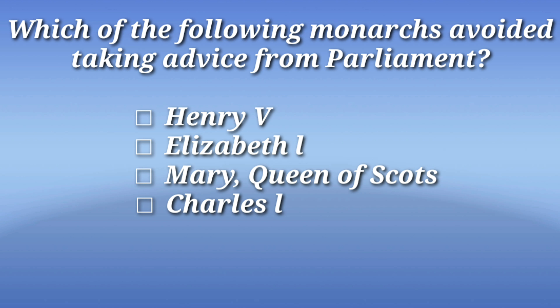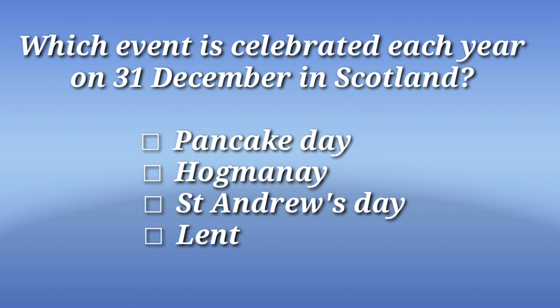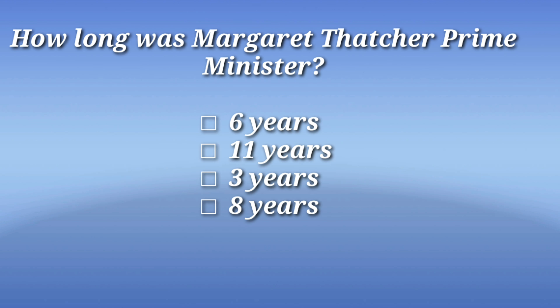Which of the following monarchs avoided taking advice from Parliament? The correct answer is Charles I. Which event is celebrated each year on 31st December in Scotland? The correct answer is Hogmanay. How long was Margaret Thatcher Prime Minister — six years, eleven years, three years, or eight years? The correct answer is eleven years.